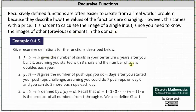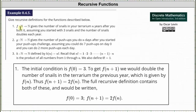Let's look at three examples. Number one: the function f maps the natural numbers to the natural numbers and gives the number of snails in your terrarium n years after you built it, assuming you started with three snails and the number doubles each year. The initial condition is f(0) = 3, since you start with three snails. To get f(n+1), we double the previous year's count f(n), giving f(n+1) = 2·f(n).